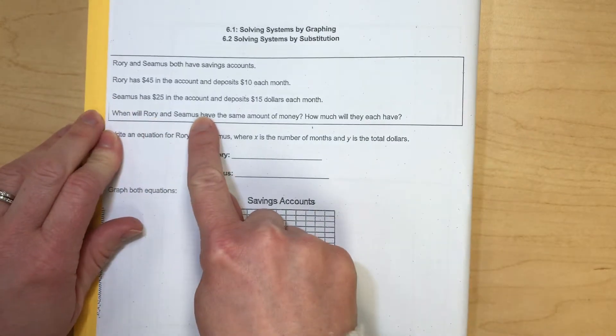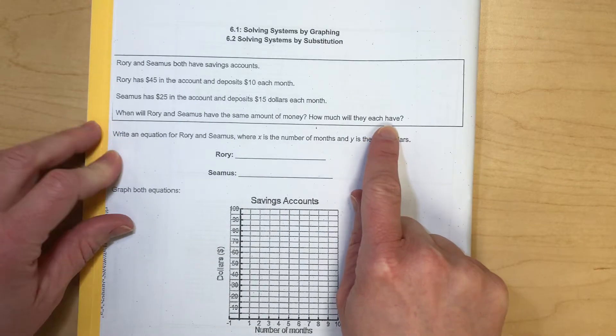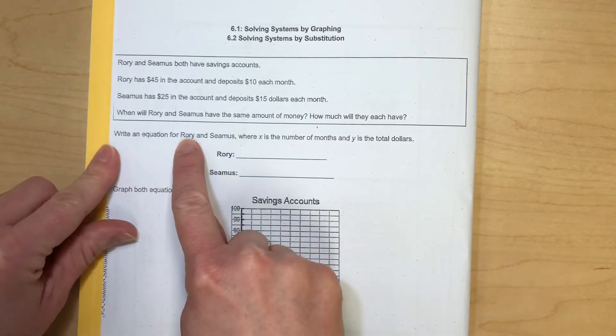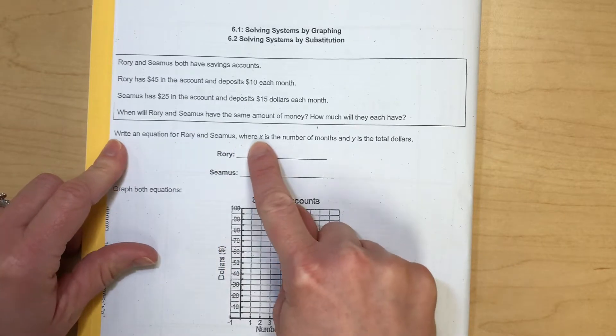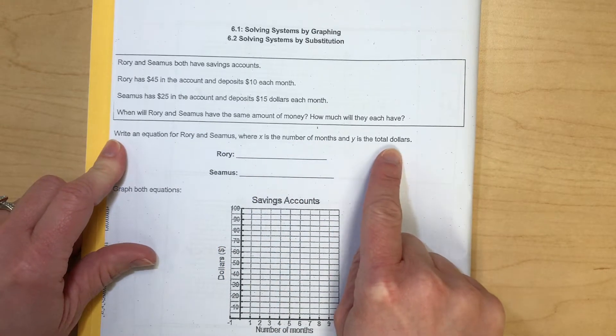When will Rory and Seamus have the same amount of money? And how much will they have when they have the same amount? Write an equation for Rory and for Seamus. X will represent the number of months and Y will represent the total number of dollars.